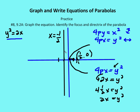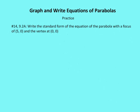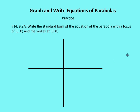In the next question, the book asks us to write the standard form of the equation of the parabola with a focus of (5, 0) and a vertex of (0, 0). In all these problems, we're dealing with parabolas that have their vertex at the origin. The first thing I'm going to do is graph the points I'm given: the vertex at (0, 0) and the focus at (5, 0).